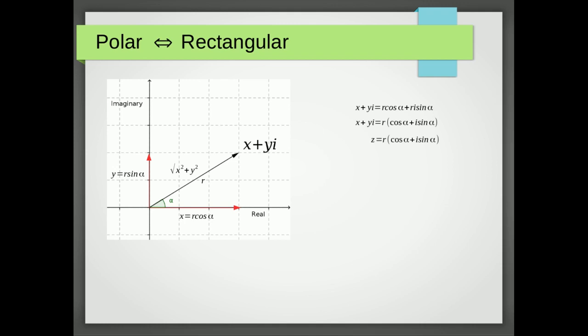We typically refer to our complex number as z. Now that's a lot to write every time — r open bracket cos α plus i sin α — when all we're really interested in is r, which we call the magnitude of the complex number, and α, the argument of the complex number. So we use a shorthand: z equals r cis α. Cis isn't a special function; it's just shorthand for cos α plus i sin α.